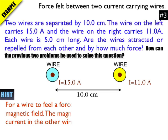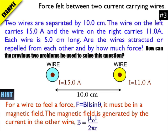So here's a little hint about how we're doing our strategy. We're going to use BIL sin θ to figure out the magnitude of the force of attraction between the two wires. And we're going to use B = μ₀I / 2πr to find the strength of the magnetic field that goes in the BIL sin θ formula.